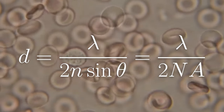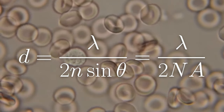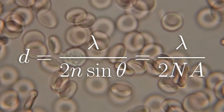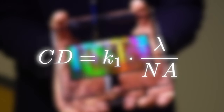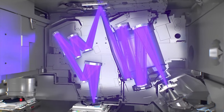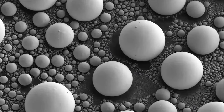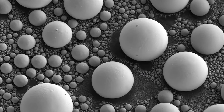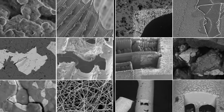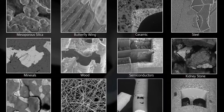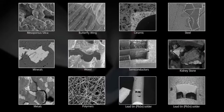Our loyal subscribers will recall that we showed you the same formula in the video about extreme ultraviolet lithography, when we talked about limiting the resolution for deep ultraviolet. Modern microscopes with special lenses are able to look at small objects and allow us to see living cells or even bacteria. But it's still not enough to see viruses.